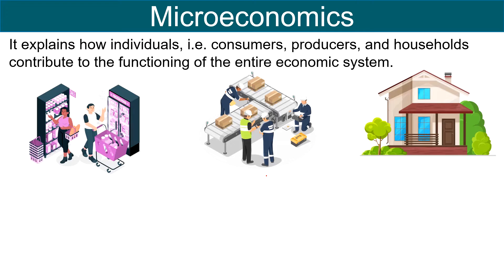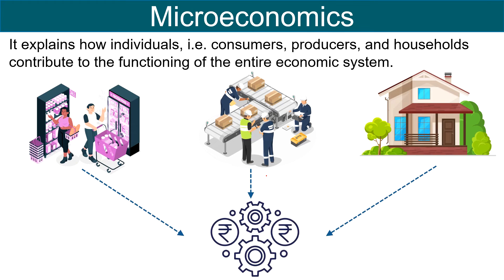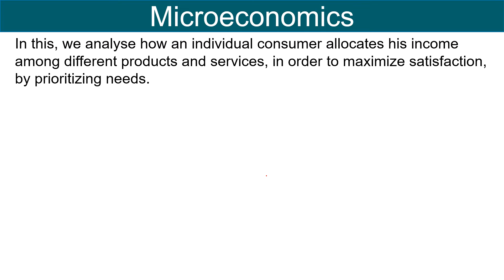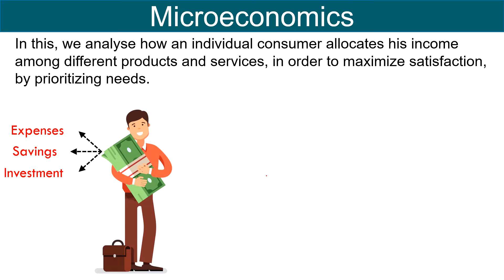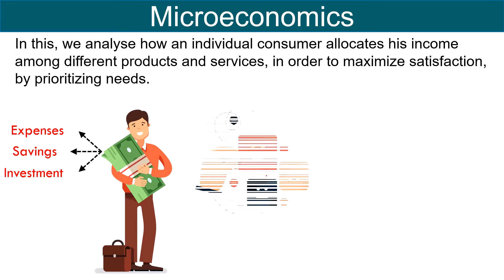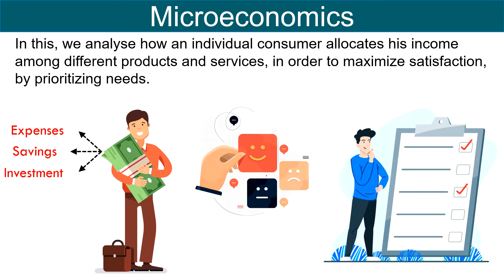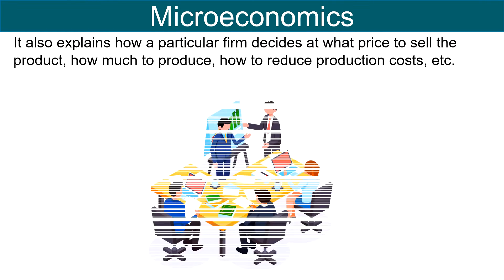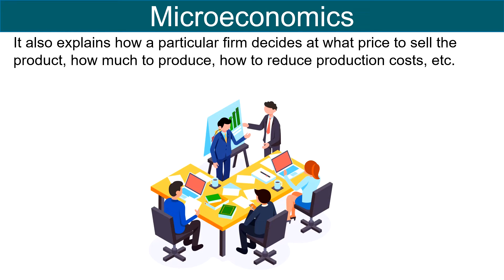It explains how an individual consumer, producer, and household contribute in the functioning of the entire economic system. In microeconomics, we deal with income of the household, pricing of the firm, wages of a worker, profit of an entrepreneur, etc. The study revolves around the interaction between consumers and producers in the economy. We analyze how an individual consumer allocates his income among different products and services in order to maximize satisfaction by prioritizing the needs. It also explains how a particular firm decides at what price to sell the product, how much to produce, how to reduce production cost, etc.